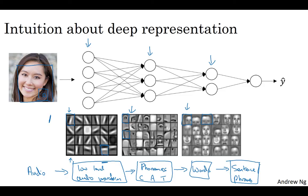And what we see is that whereas the earlier layers are computing what seems like relatively simple functions of the input, such as where are the edges, by the time you get deep in the network, you can actually do surprisingly complex things, such as detect faces or detect words or phrases or sentences.